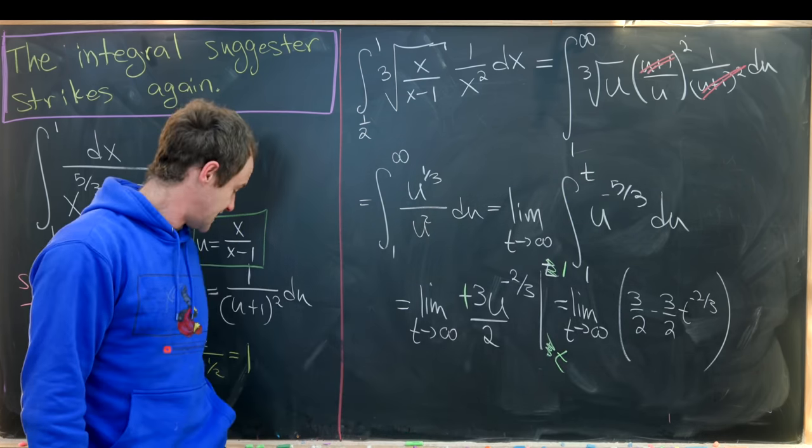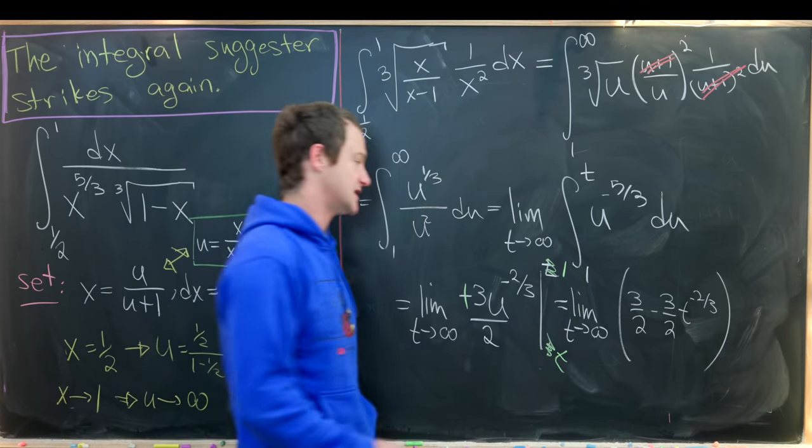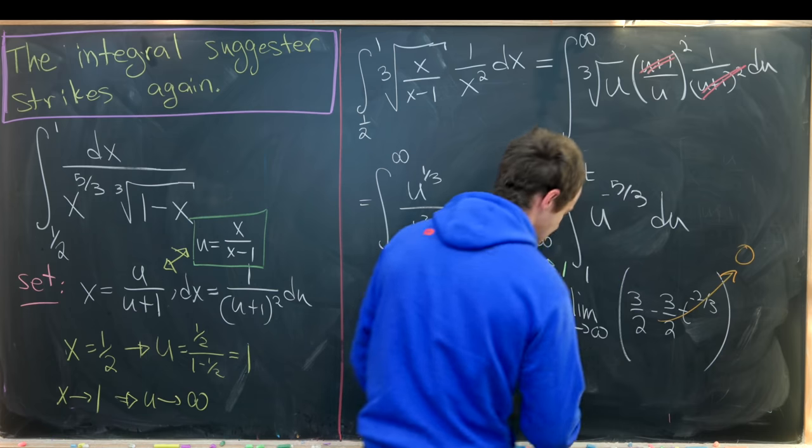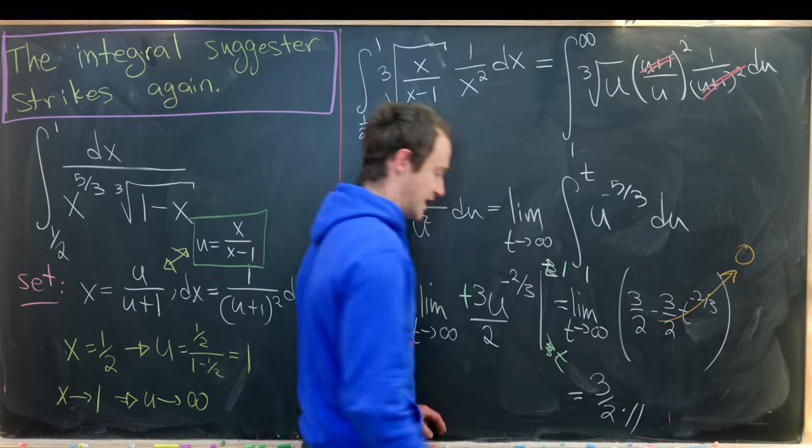Great. But now if t approaches infinity, since we've got a negative exponent on t there, this is going to charge off towards zero, leaving us with our final answer of 3 over 2 or 1 and a half.